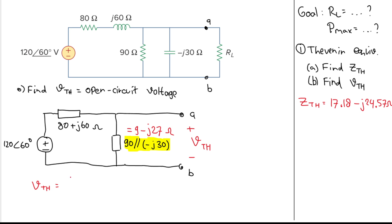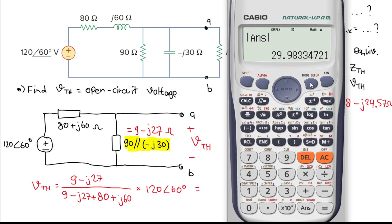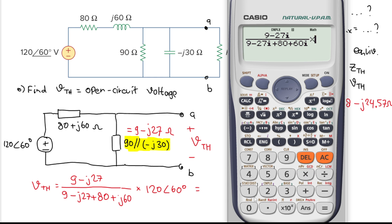Using the voltage divider, Vth equals (9 - j27) divided by (9 - j27 + 80 + j60), all multiplied by 120∠60°. Let's plug this into the calculator: (9 - 27i) divided by (9 - 27i + 80 + 60i), multiplied by 120∠60°.